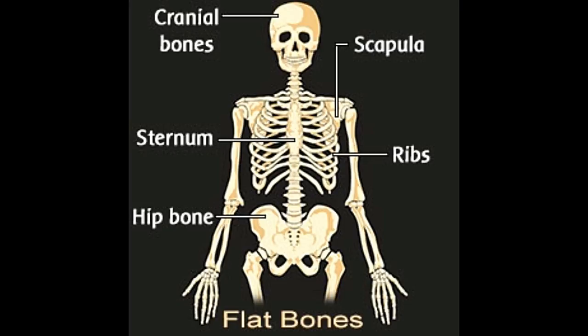The bones of the human body are classified into long bones, short bones, sesamoid bones, flat bones, irregular bones, and wormian bones. The long bones include femur, tibia, fibula, radius, ulna, and humerus. The cube-shaped short bones include the carpals, tarsals, metacarpals, metatarsals, and phalanges.